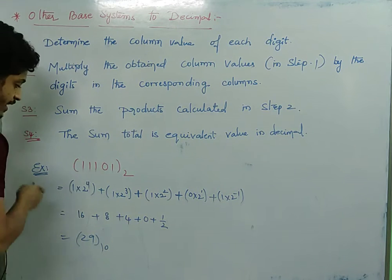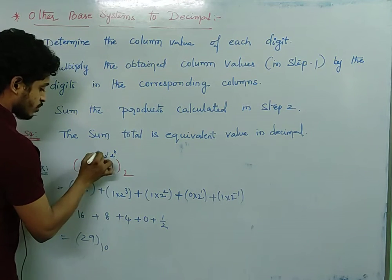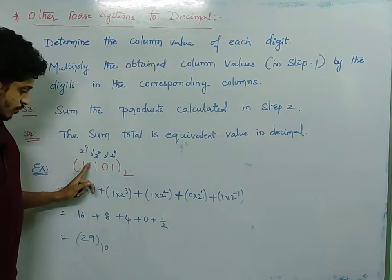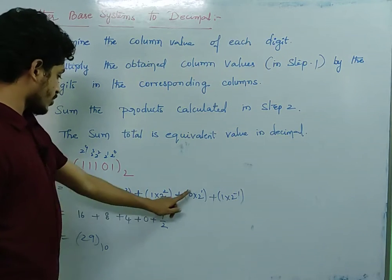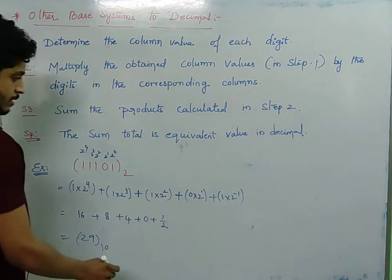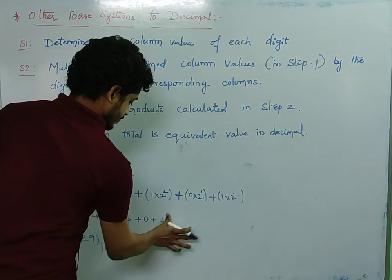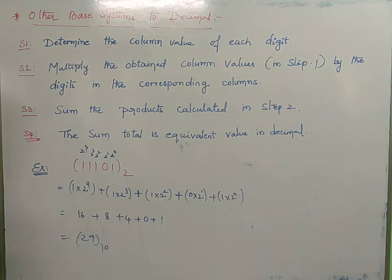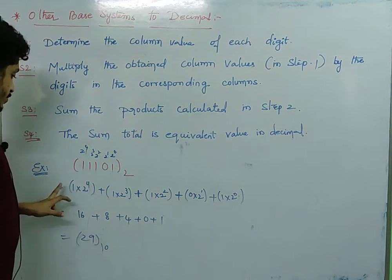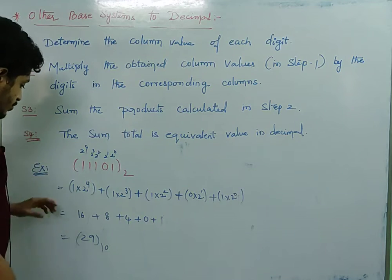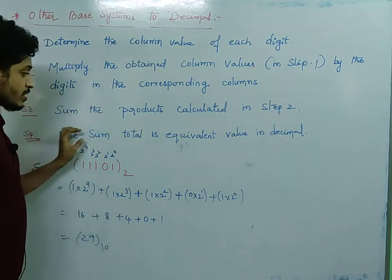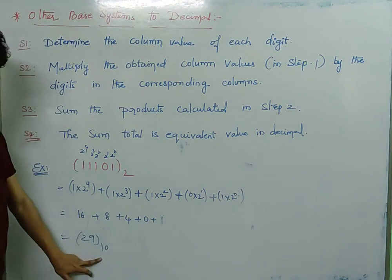Now let us see how to convert from other base systems to decimal. Step 1: determine the column value of each digit. Step 2: multiply the obtained column values by the digits in the corresponding columns. For example, 11101 to the base 2 — the column positions are 0, 1, 2, 3, 4. So: 1 × 2⁴, 1 × 2³, 1 × 2², 0 × 2¹, 1 × 2⁰. Sum the products: 16 + 8 + 4 + 0 + 1 = 29 to the base 10. That is the decimal equivalent value.